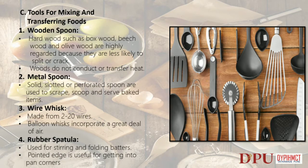Tools for mixing and transferring foods. Wooden spoon: hardwood such as boxwood, beechwood and olive wood are highly regarded because they are less likely to split or crack; wood does not conduct or transfer heat. Metal spoon: solid, slotted or perforated spoons are used to scrape, scoop and serve baked items. Wire whisk: made from 2–20 wires; balloon whisks incorporate a great deal of air. Rubber spatula: used for stirring and folding batters; pointed edge is useful for getting into pan corners.